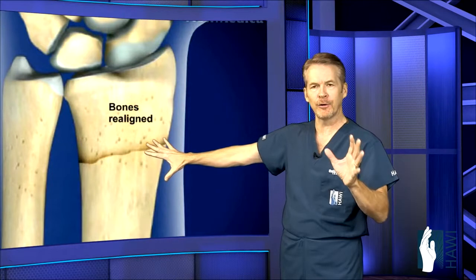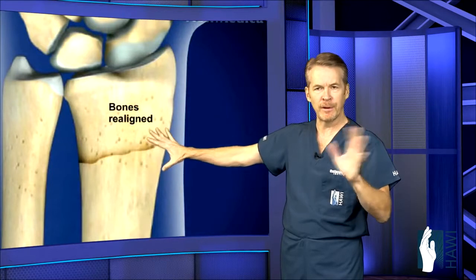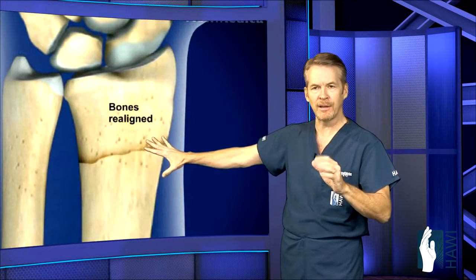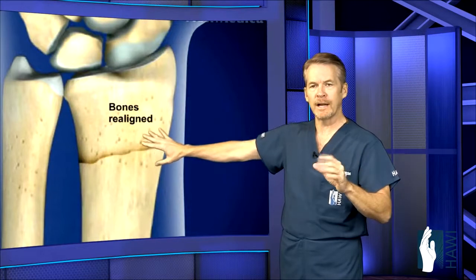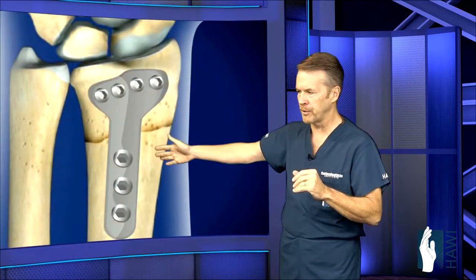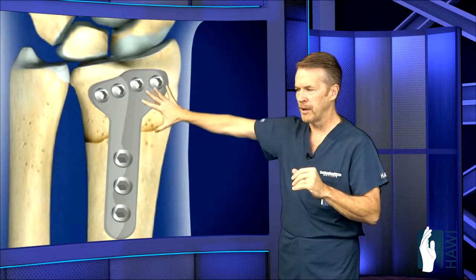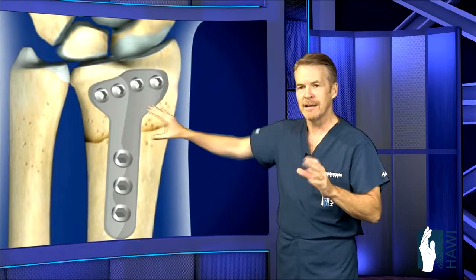In surgery, you're knocked out for about 30 minutes, we put these back in place, and then frequently we'll actually cut open the skin and go in and put a plate and screws, as you can see here, on the front of the wrist.